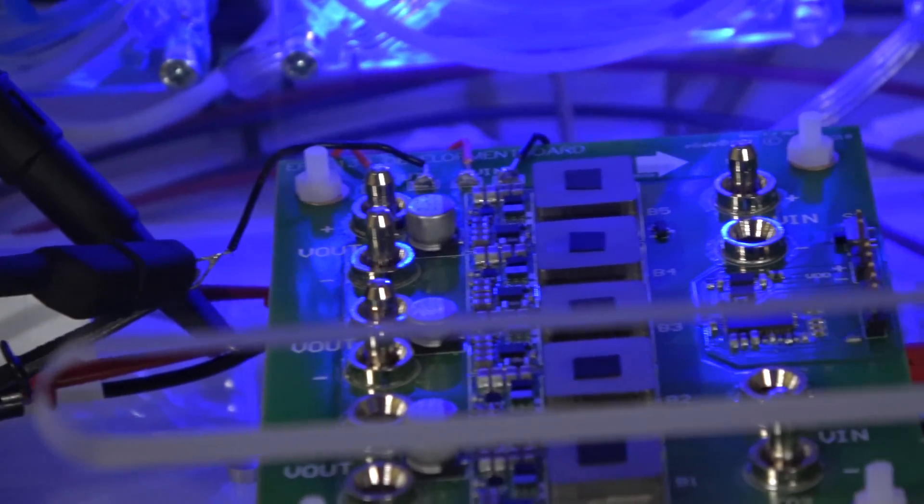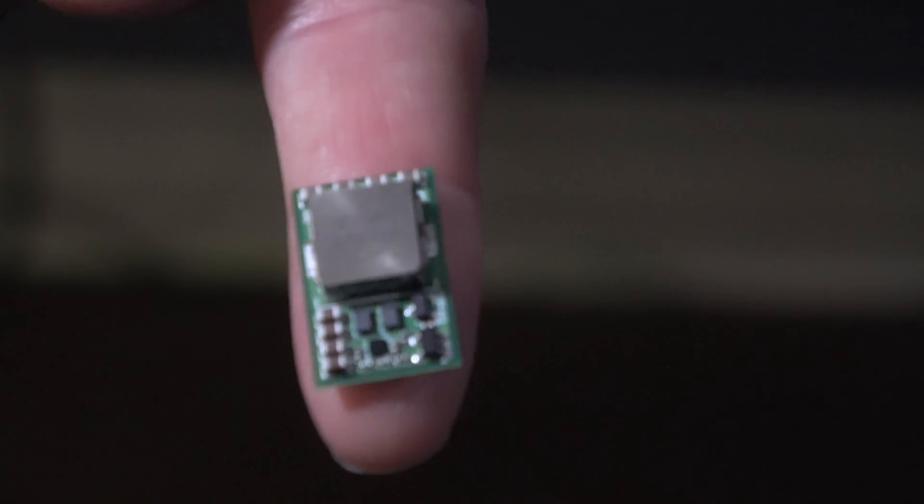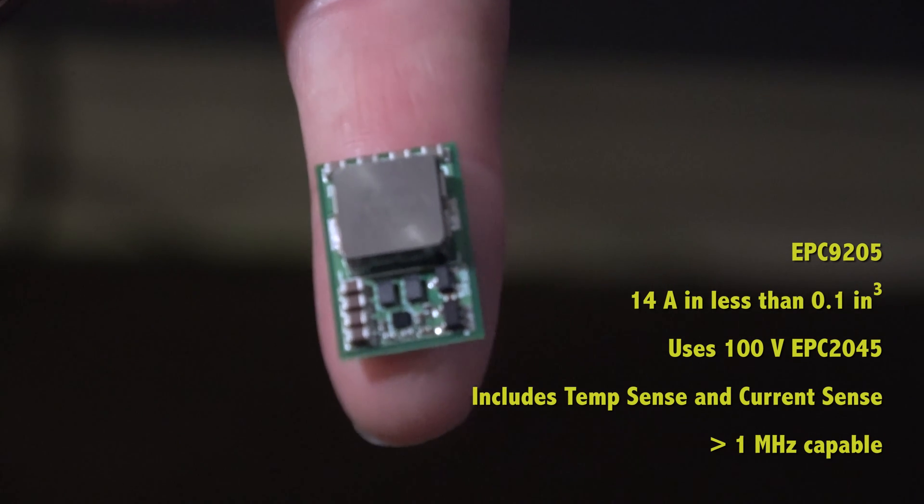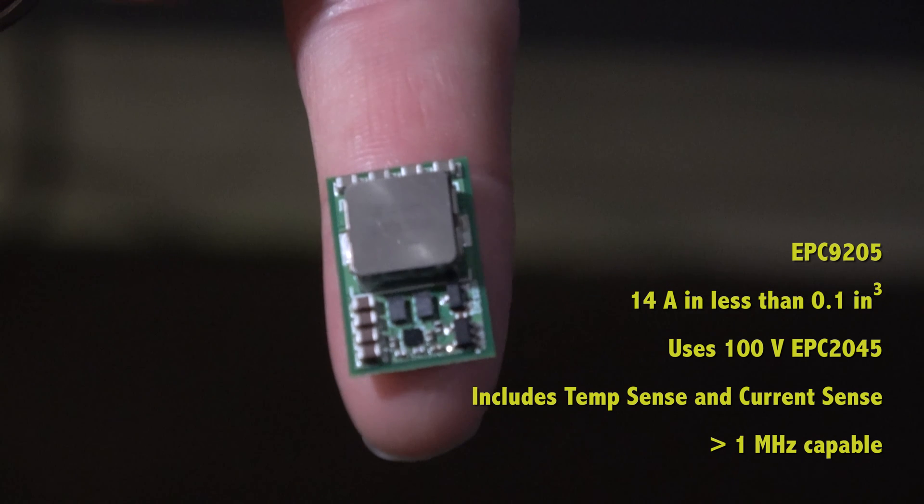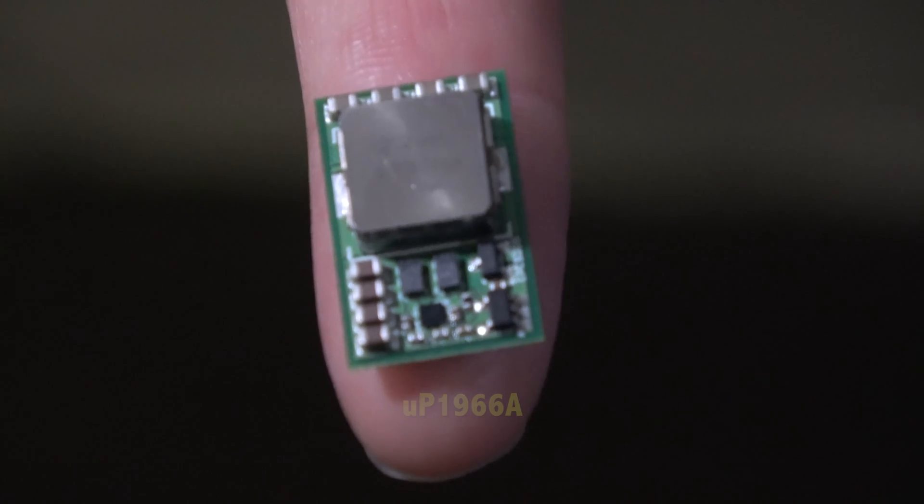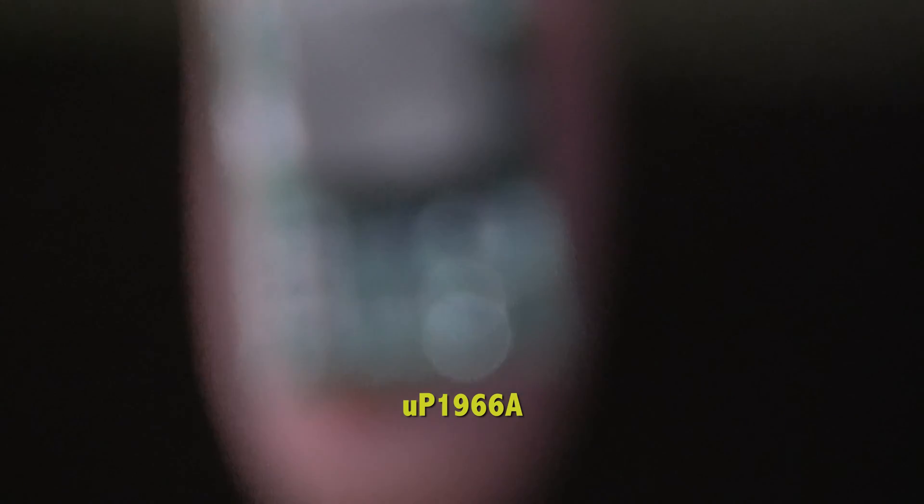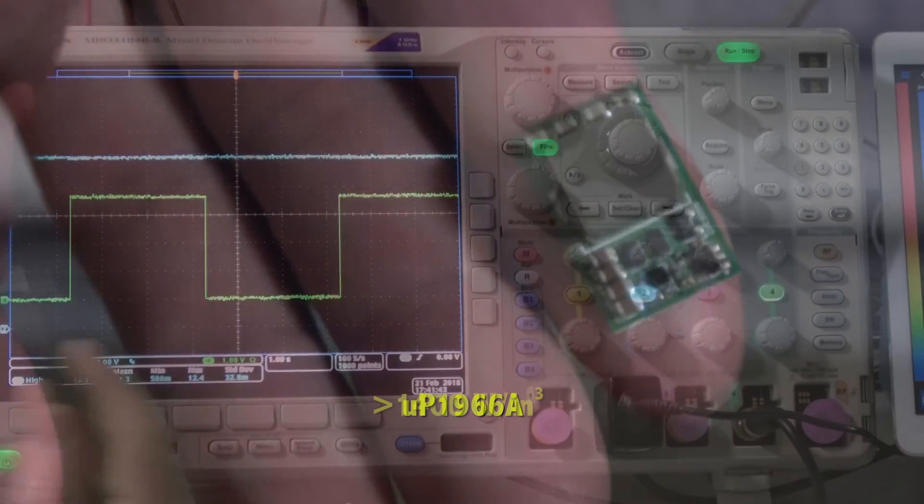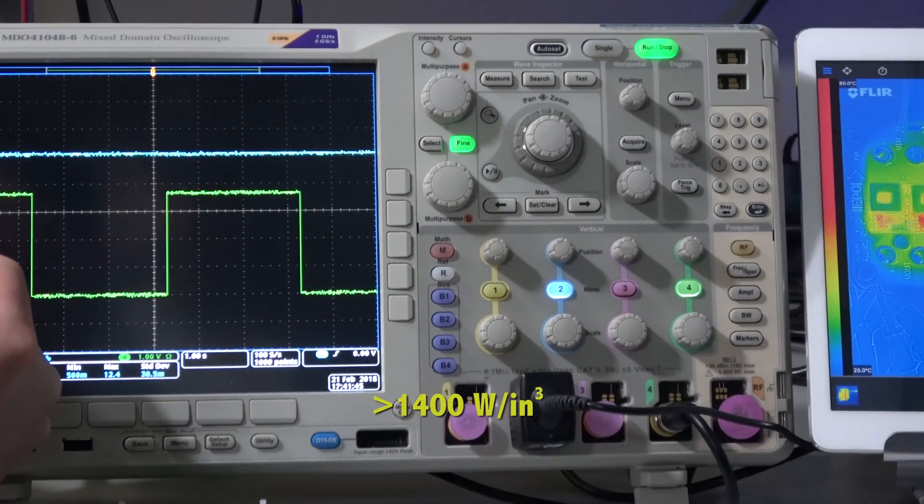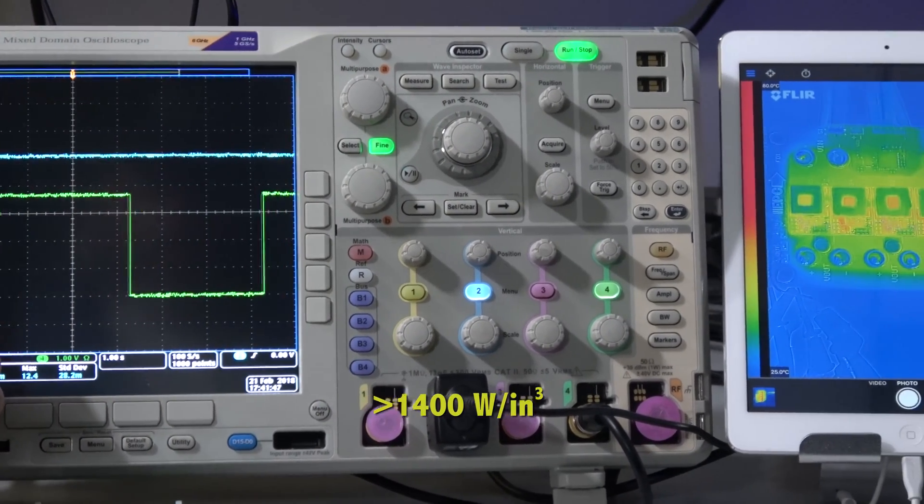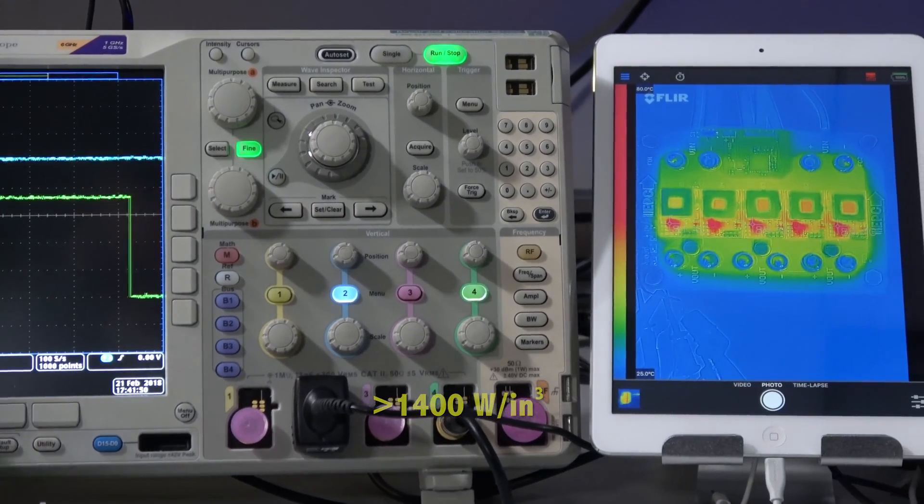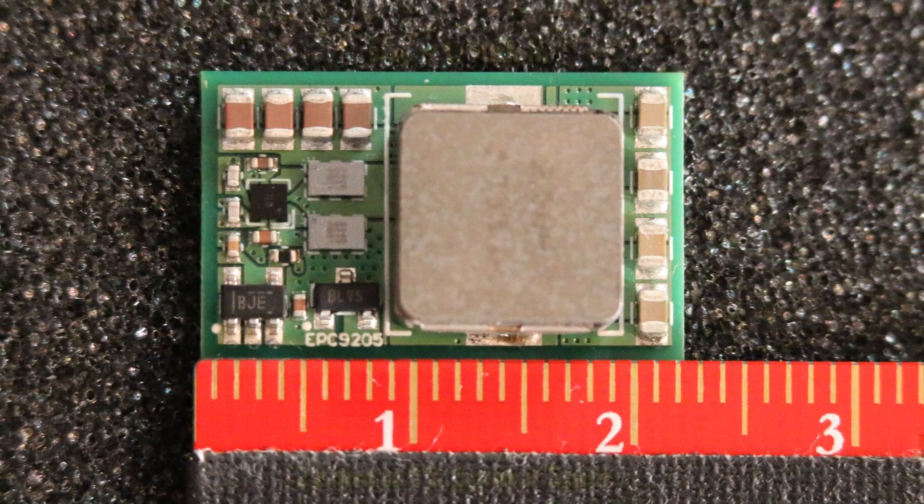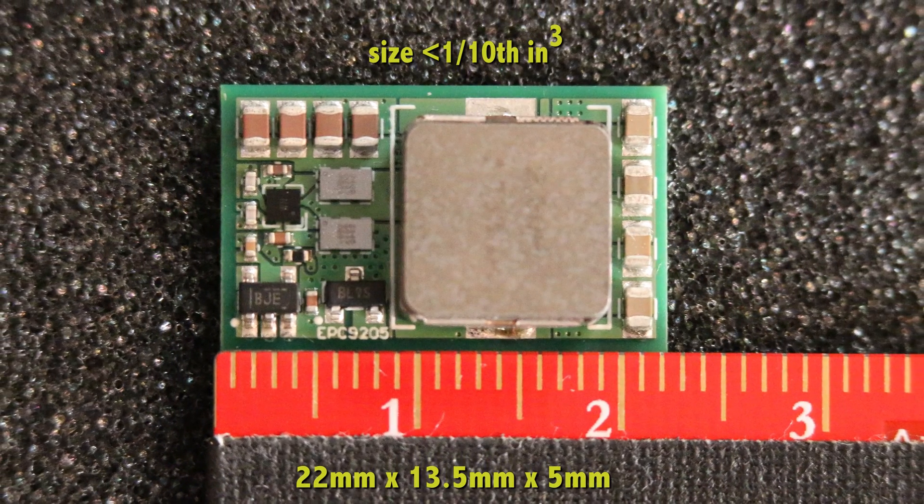Another example of this is the EPC-9205, which also uses the 100V EPC-2045 eGaN FET and is driven by the UP1966A from UPI Semiconductor. It exceeds 1,400 watts per cubic inch in a 48V to 12V application and occupies only less than one tenth of a cubic inch of board space.